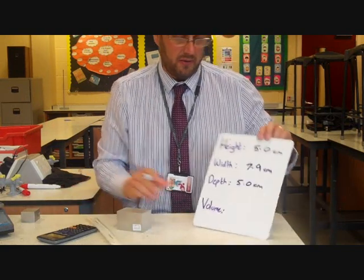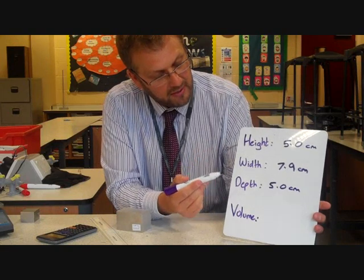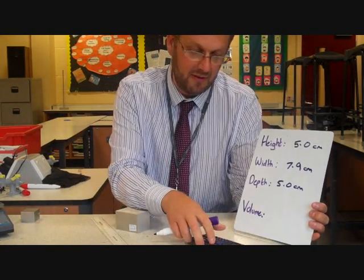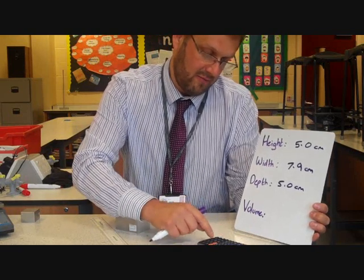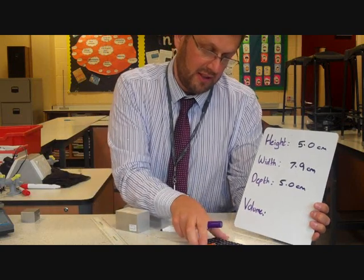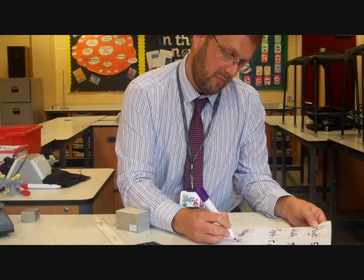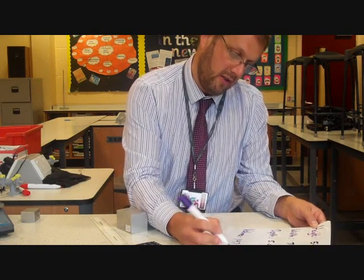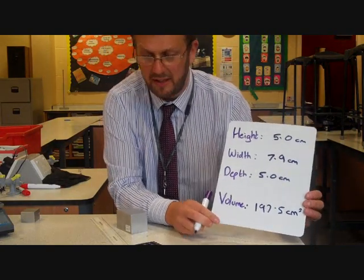You should know that to work out volume you do height times width times depth. If you put all those into a calculator — 5 times 7.9 times 5 — that gives us an answer of 197.5, and the units for that are going to be centimetres cubed.